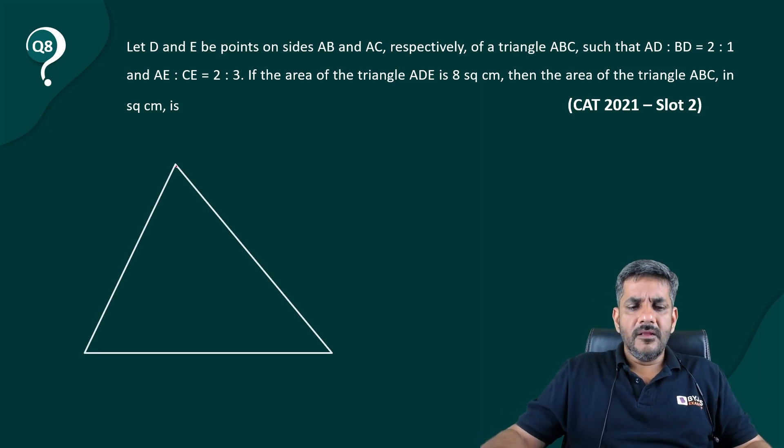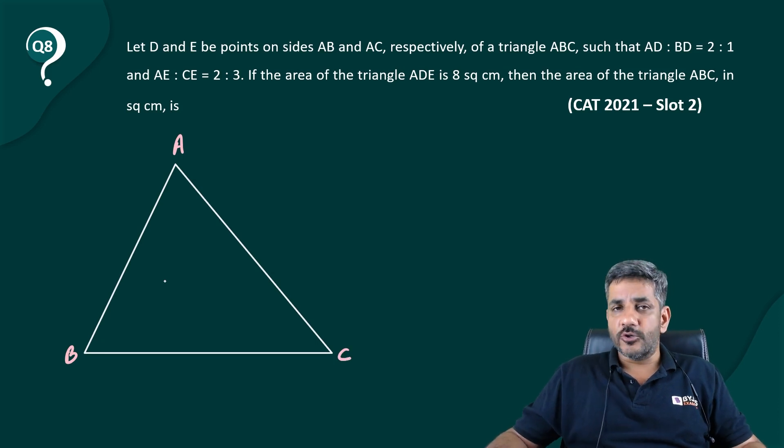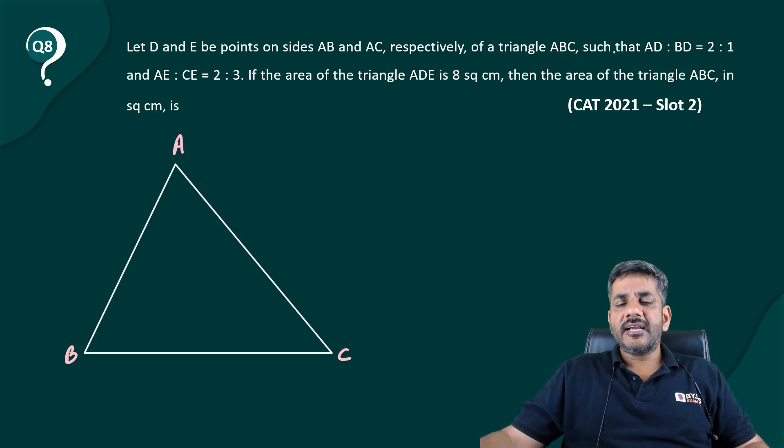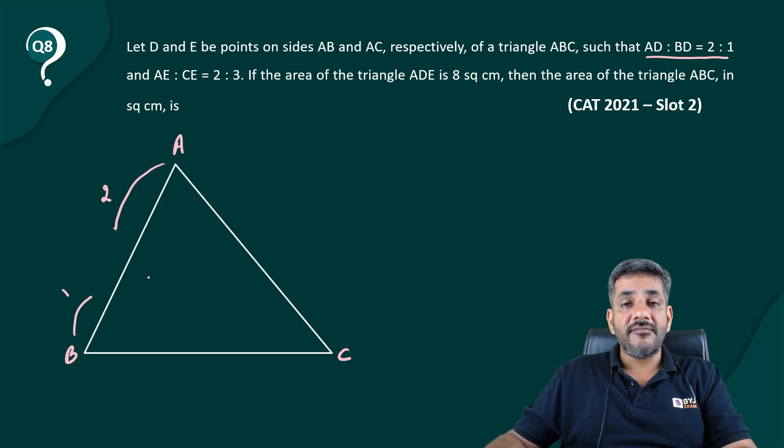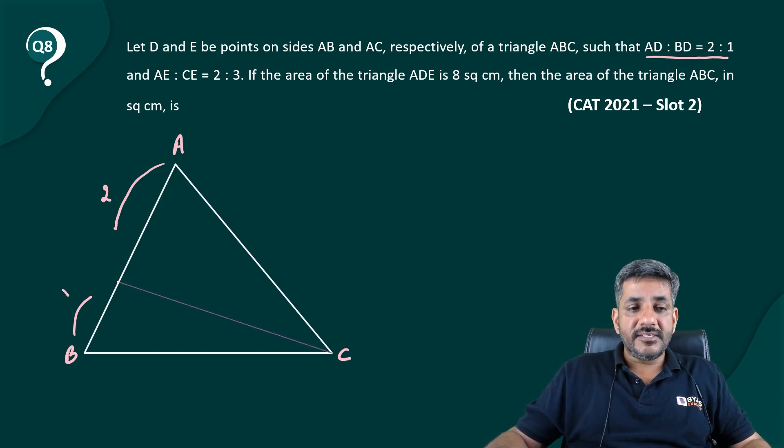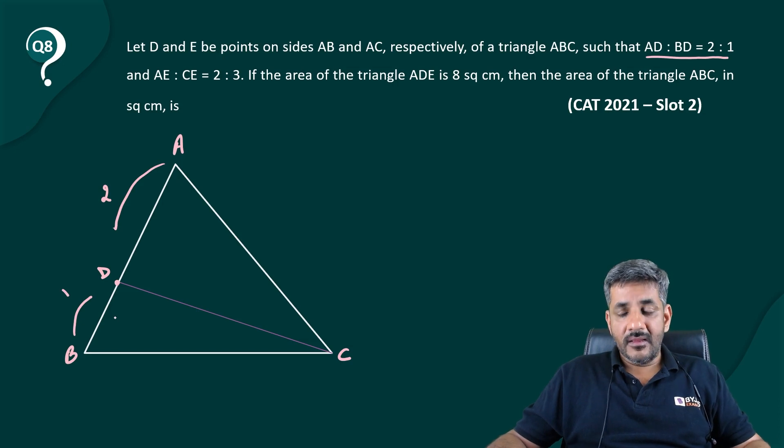I'm just making a triangle first of all. So this point is let's say A, this is B, this is C. So we have a triangle ABC over here. He says take a point D on AB such that AD to BD is 2 to 1. So I have to take a point D here such that this distance is larger than this distance. So I have taken this point D over here such that that distance is equal to 2 and this distance is equal to 1.